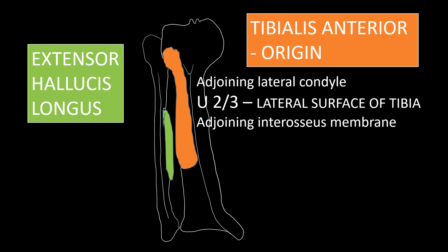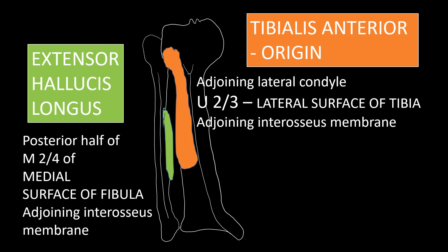The next muscle is extensor hallucis longus, which originates from the fibula — specifically the medial surface of the fibula. The medial surface of the fibula is divided into an upper one-fourth, middle two-fourths, and lower one-fourth. Extensor hallucis longus arises from the posterior half of the middle two-fourths of the medial surface of the fibula, and also from the adjoining interosseous membrane.